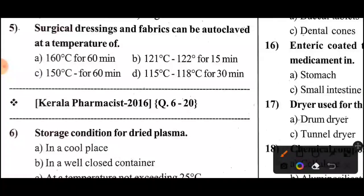Fifth question: Surgical dressings and fabrics can be autoclaved at a temperature of — the answer is Option B, 121 degrees Celsius for 15 minutes.